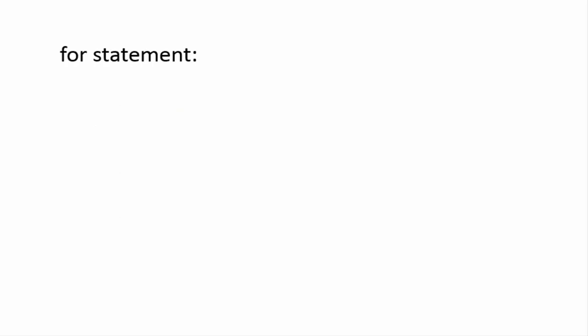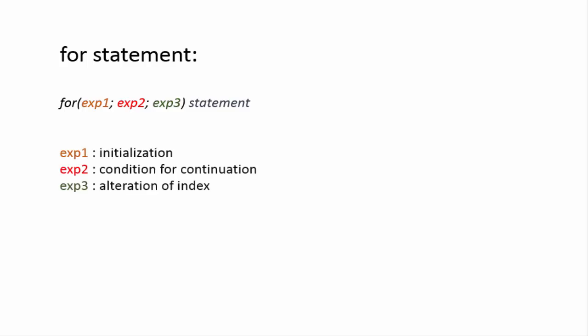The for statement is the most commonly used looping statement. It takes the general format: for (expression1; expression2; expression3) statement. Expression 1 does the work of initialization, expression 2 tests the condition for continuing the loop, and expression 3 alters the index. Expression 1 sets an index and initializes it so that the index value satisfies the condition in expression 2, then the statement is executed.